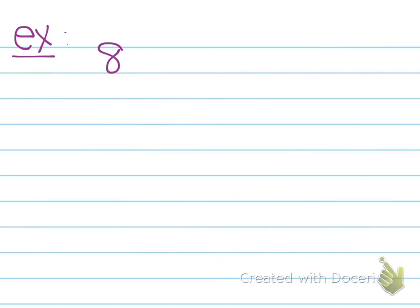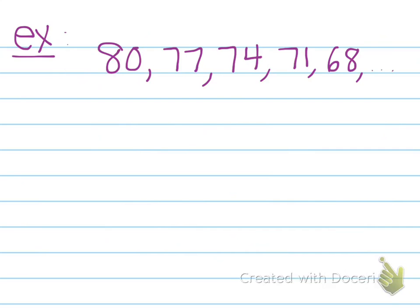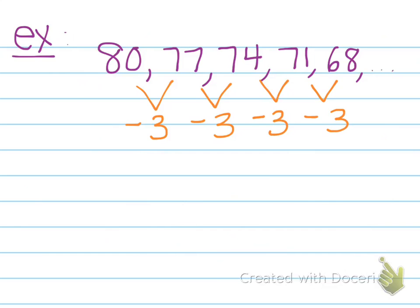Let's look at an example. Let's say we have the sequence 80, 77, 74, 71, and 68, and that can continue. The difference between 80 and 77 is minus 3. 77 and 74 is also minus 3. 74 and 71, minus 3. And 71 and 68, minus 3. So this means our D value, our common difference, is negative 3.